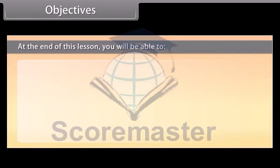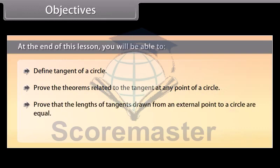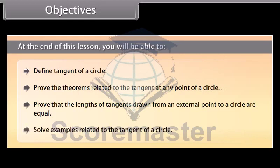At the end of this lesson you will be able to: define tangent of a circle; prove the theorems related to the tangent at any point of a circle; prove that the lengths of tangents drawn from an external point to a circle are equal; and solve examples related to the tangent of a circle.